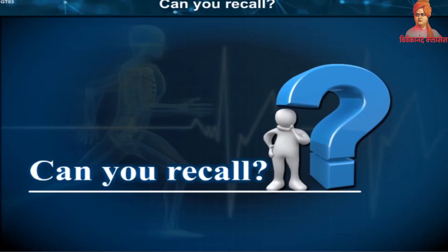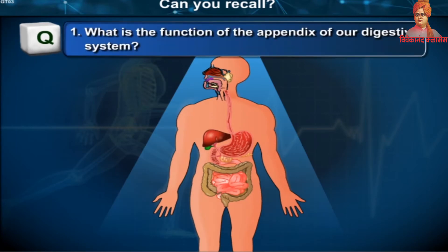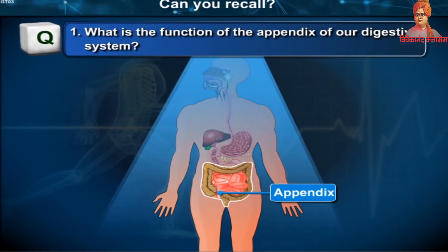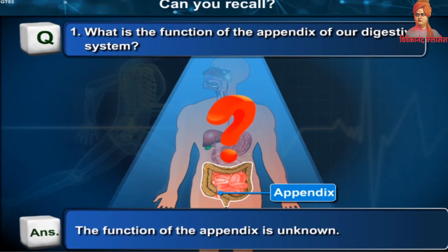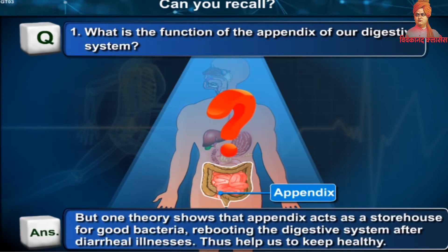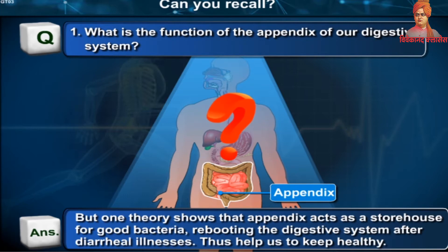What is the function of the appendix of a digestive system? The function of the appendix is unknown, but one theory shows that the appendix acts as a storehouse for good bacteria, rebooting the digestive system after diarrheal illnesses, thus helping us to keep healthy.